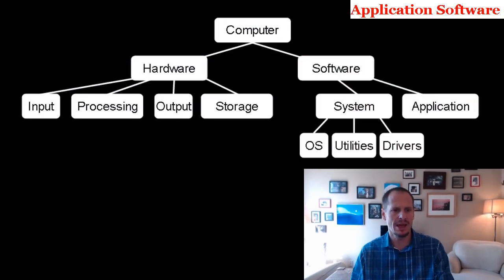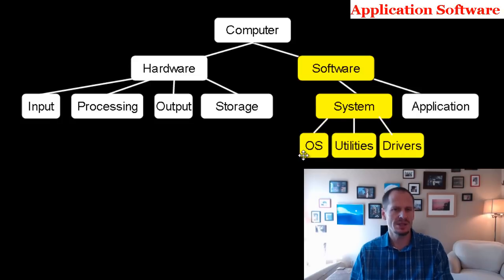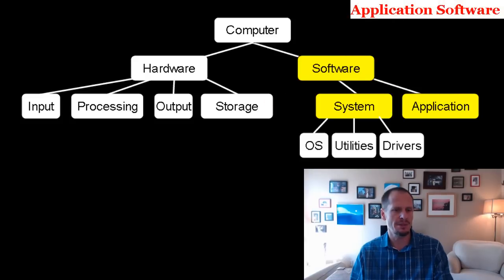When we talk about computers, we have this way of categorizing them. At the top we have computer, and we break it down into hardware and software. Hardware breaks down into IPOS — the different hardware components. We've spent a lot of time looking at I/O, storage, and processing components. Then last week we started looking at system software. Software can be broken down into system software and application software, and last week we looked at system software — operating systems, utilities, and drivers.